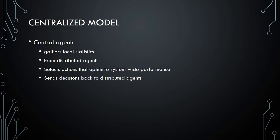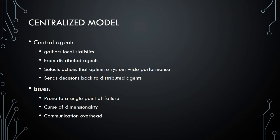In a centralized model we have a central agent that gathers local statistics from distributed agents such as individual intersections or cars. It selects the action that optimizes system-wide performance and sends decisions back to the distributed agents. The issues are: it is prone to a single point of failure, it has the curse of dimensionality with an exponential number of action-state pairs, and there is communication overhead among all intersections and the central controller.